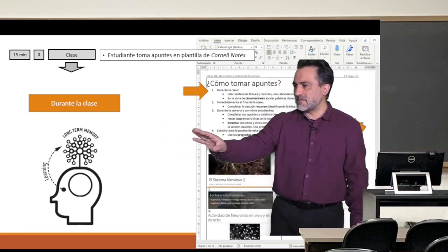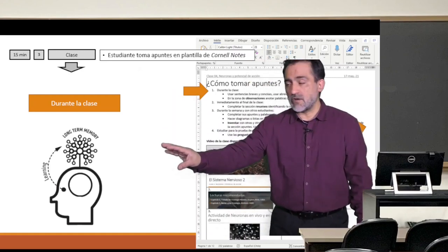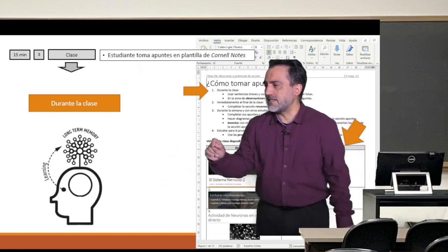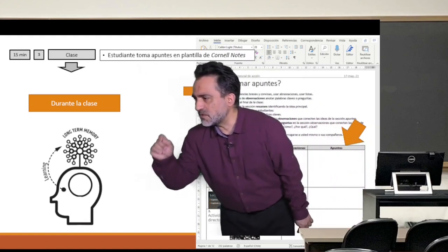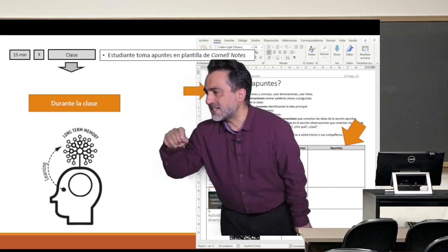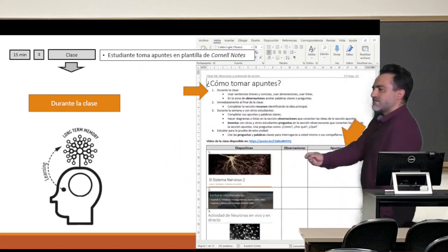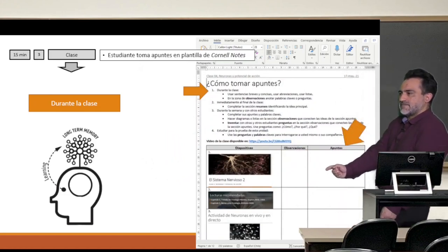So, what's the idea? Surely you can't see it because it's a bit small. Certain instructions come in these Cornell Notes. For example, it says, instruction number one, during a class, use brief and concise sentences, use abbreviations, use lists, in the observation zone, the one that's here, more to your right.